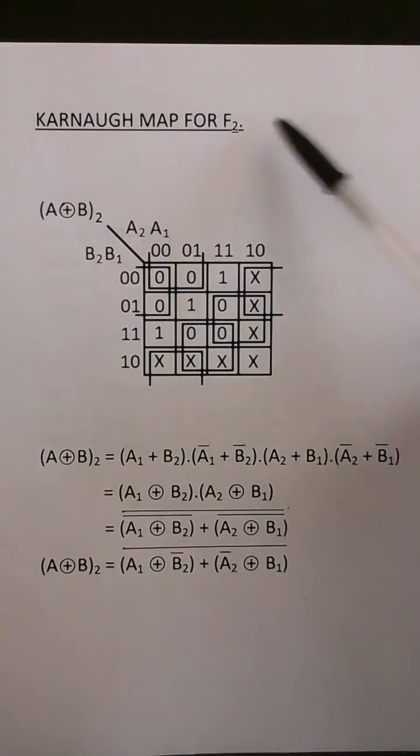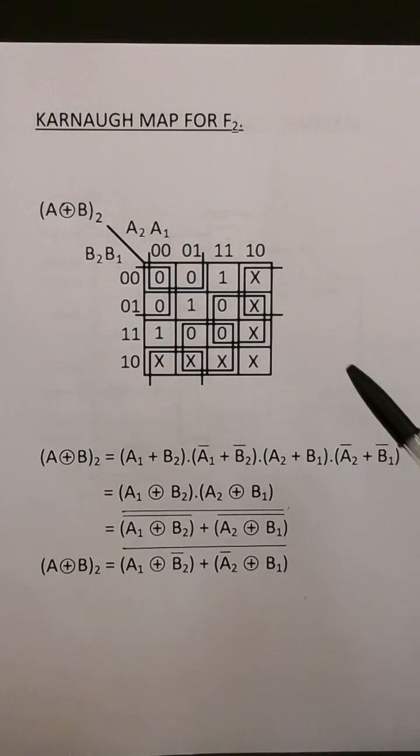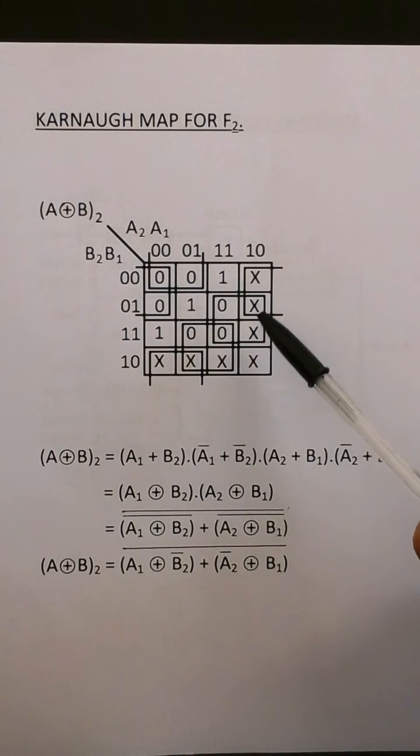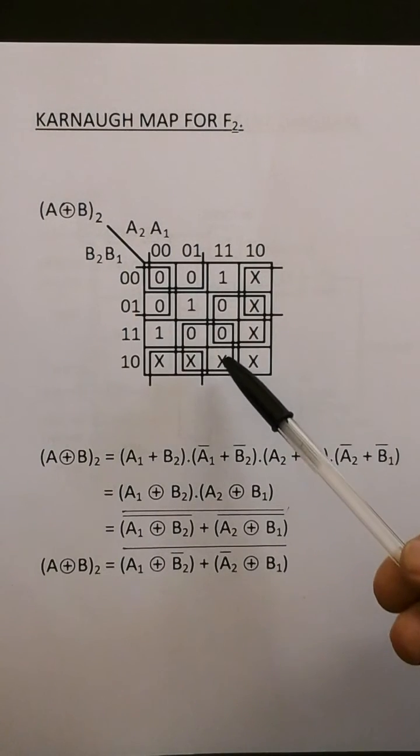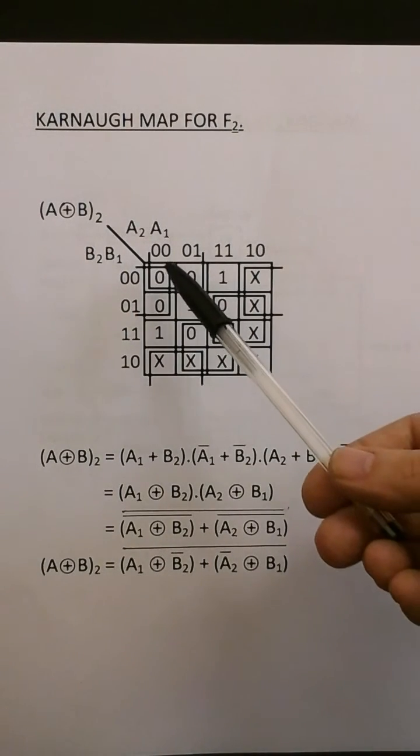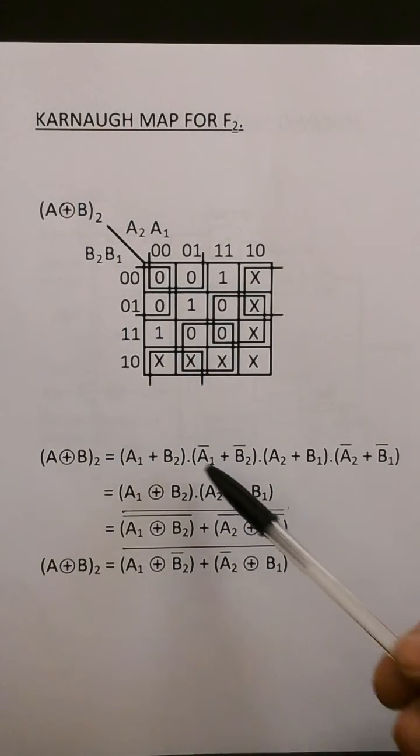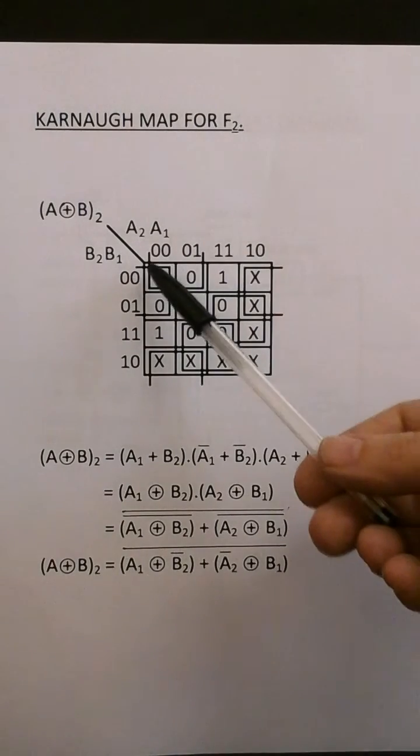Here we have the Karnaugh map for f2. Here we're looping zeros. So it's the product of sums expression. So here we have A1 and B2. Not A1 and not B2 would be there.